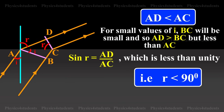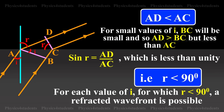Sin r is equal to AD by AC which is less than unity. That is r less than 90 degrees. For each value of i for which r is less than 90 degrees, a refracted wavefront is possible.